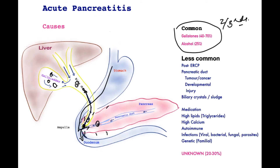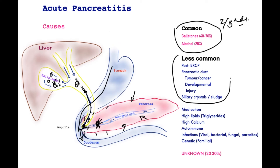Pancreatic tumors, which cause obstruction of the pancreatic duct, are also a source of pancreatitis. Developmental anomalies of the pancreatic duct may sometimes predispose patients to recurrent acute attacks of pancreatitis. Other causes include direct injury to the pancreas itself. Sometimes stones may not be found within the gallbladder, but there might be biliary sludge or crystals, and these act much like stones in triggering an attack of acute pancreatitis.